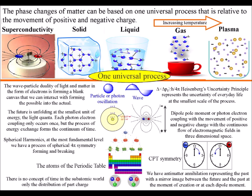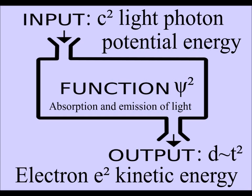The spontaneous absorption and emission of light is continuously changing photon potential energy into the kinetic energy of an electron.